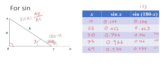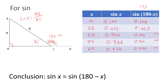In conclusion: sine x is equal to sine(180 minus x). The ratios of these two angles are the same from a trigonometric standpoint.